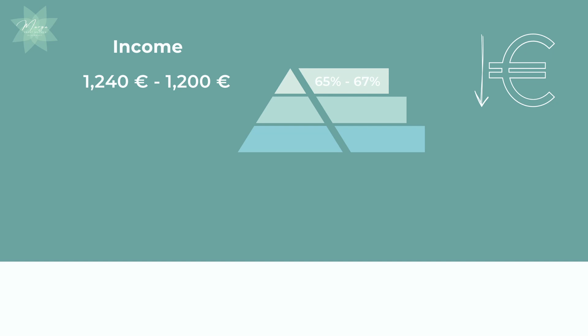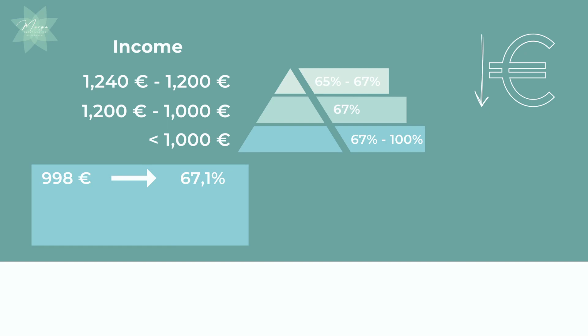You'll receive 65.1% for an income of 1,239 euros and 65.2% for an income of 1,236 euros, and so on. If your income was between 1,200 euros and 1,000 euros, you'll receive 67%. If your income was less than 1,000 euros, the percentage again rises from 67% step-by-step until 100%. For every 2 euros that your income was below 1,000 euros, the percentage rises by 0.1%. This means that if your income was 998 euros, you will receive 67.1%, and for 996 euros you will receive 67.2%, and so on.